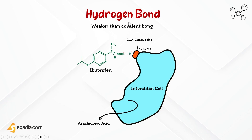Next, we will discuss hydrogen bonds. Hydrogen bonds are a type of non-covalent interaction that plays a significant role in molecular recognition and binding. Hydrogen bonds occur when a hydrogen atom covalently bonded to an electronegative atom — such as nitrogen, oxygen, or fluorine — interacts with a nearby electronegative atom. A hydrogen bond donor is a group or atom that donates a hydrogen atom, often attached to a highly electronegative atom. Examples of hydrogen bond donor groups include hydroxyl groups, amino groups, and carboxyl groups.